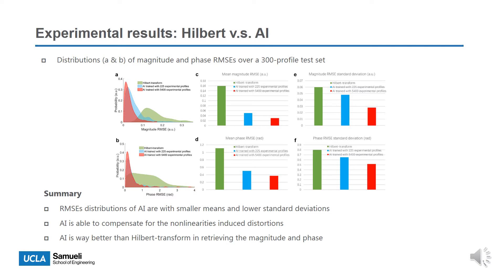The figure shows the distributions of the magnitude and phase root-mean-squared error (RMSE) of both AI models and the Hilbert method over a test set consisting of 300 profiles. Experimentally trained neural networks produce lower mean errors with smaller standard deviations. The Hilbert transform has a much larger mean RMSE and standard deviation, and the same comparative behavior holds for the phase RMSE. To conclude, AI is far better than the Hilbert transform method in retrieving the magnitude and phase.